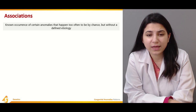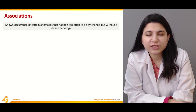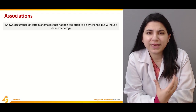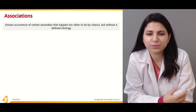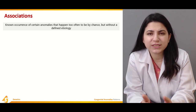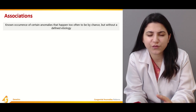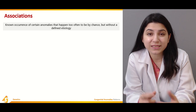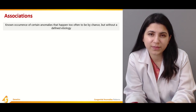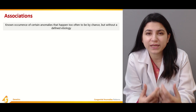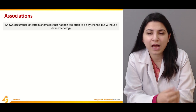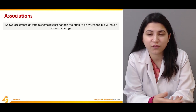The second pattern is associations. Associations are a known occurrence of certain anomalies that happen too often to be by chance, but without a defined etiology. This helps differentiate associations from syndromes — the occurrence of certain anomalies is common, but you cannot actually predict or define how the pattern of anomalies occurs because there is no defined etiology.